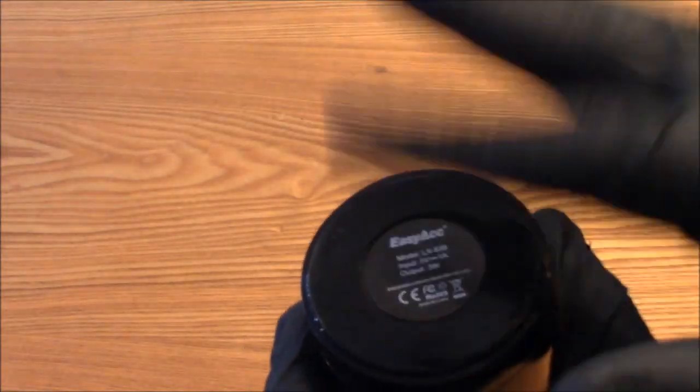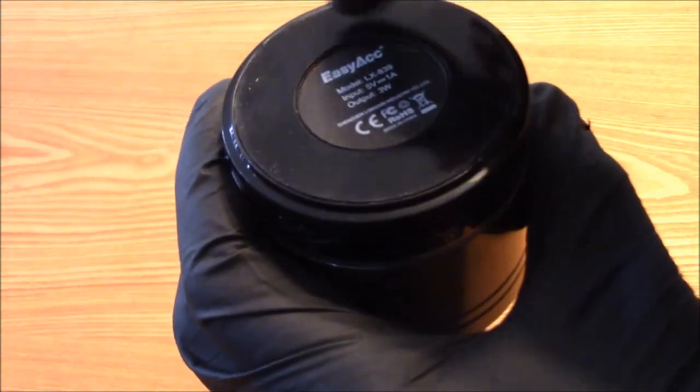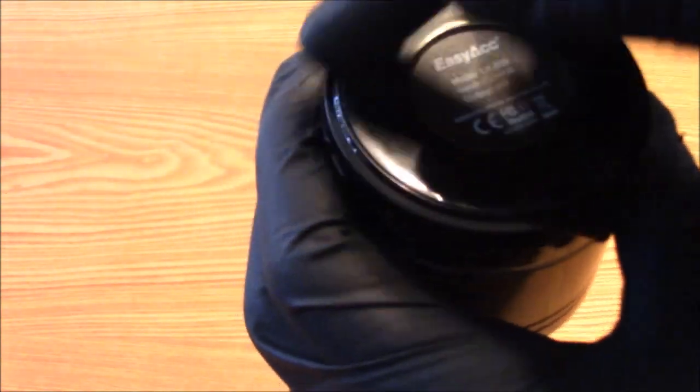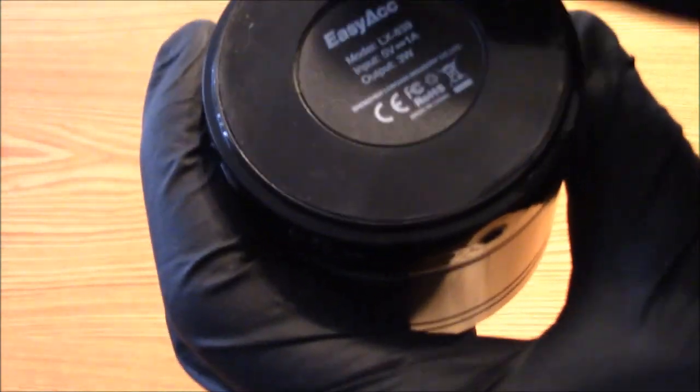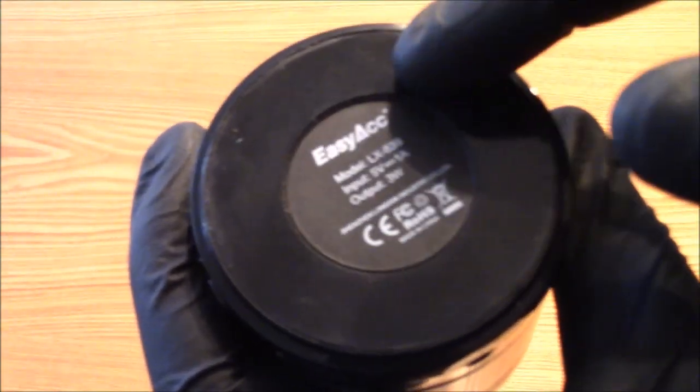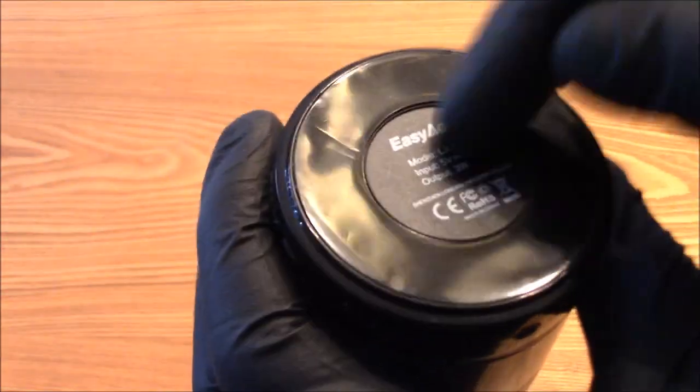Now on these speakers, the way to take these apart is on the bottom here. They have the screws under this glued down piece of rubber. So you have to take this off to get to the screws.